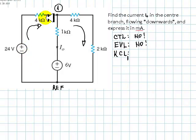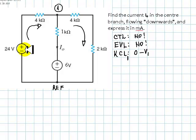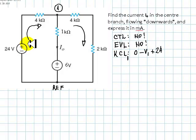The current coming in is in an RV branch. The current in an RV branch equals the voltage of the origin — that's the reference, zero — minus the voltage of the destination, minus V1, plus or minus the value of the source. In this case the source is helping the chosen direction of the current, so it's plus 24, divided by the resistance in that branch: 4,000 ohms, or 4k.